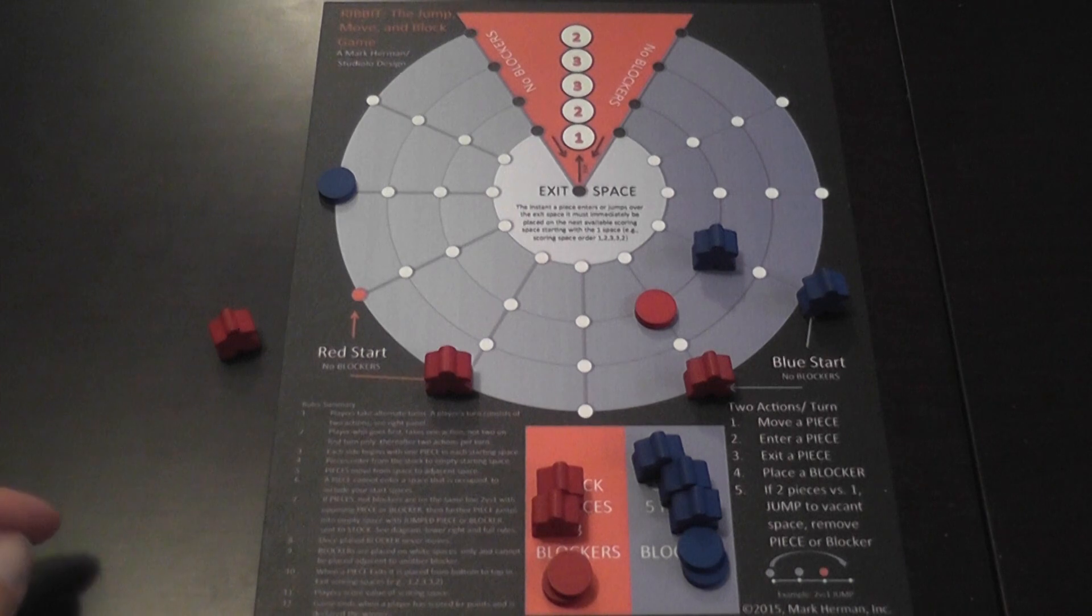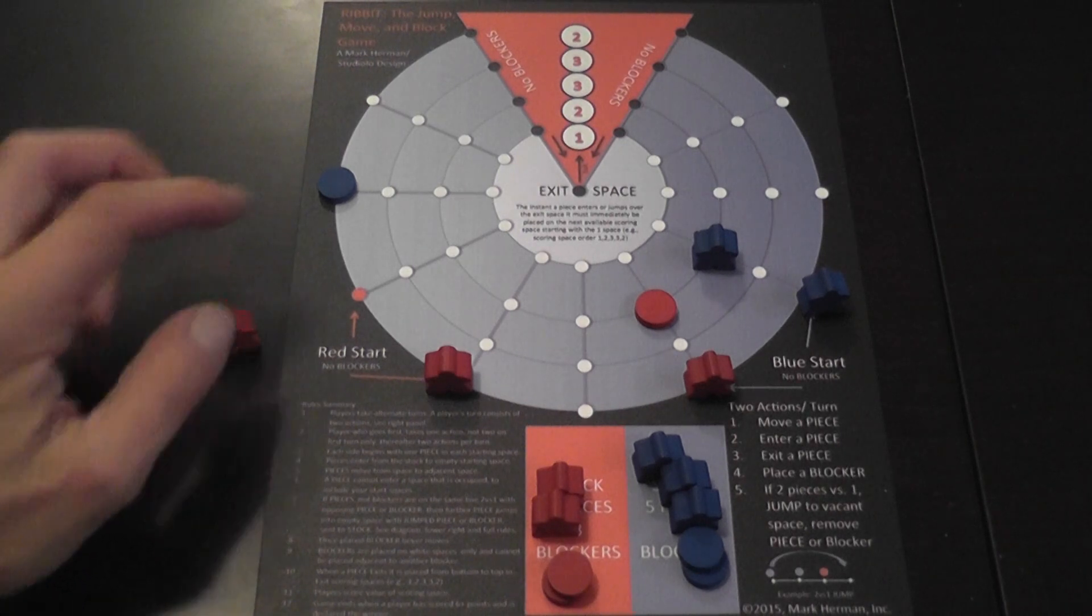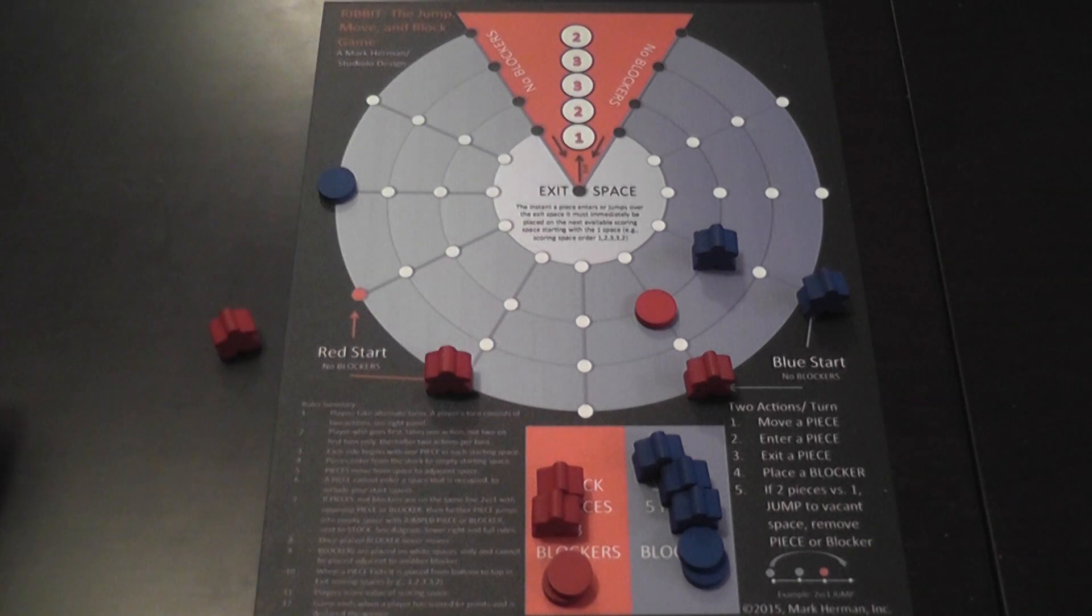You alternate moving pieces on the board, jumping, placing blockers until one of the two players has scored a total of six points here and that player is the winner.